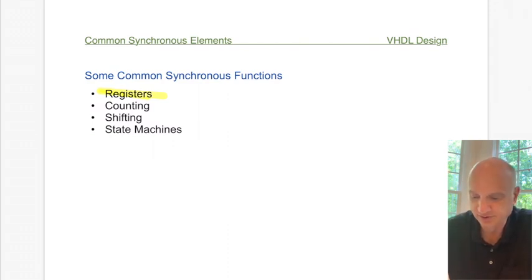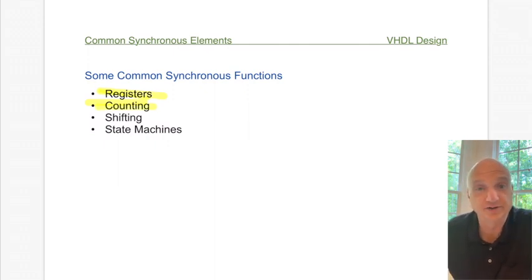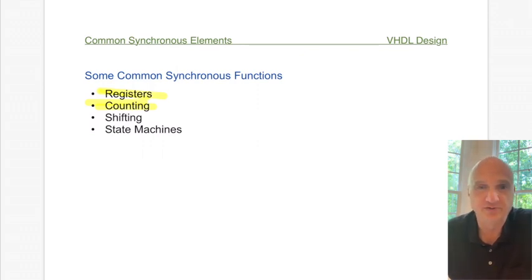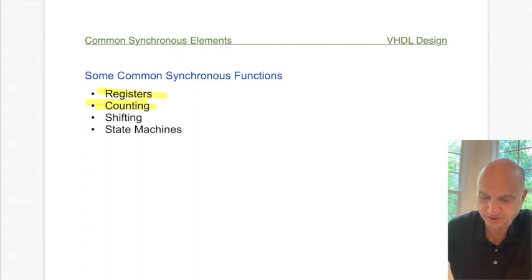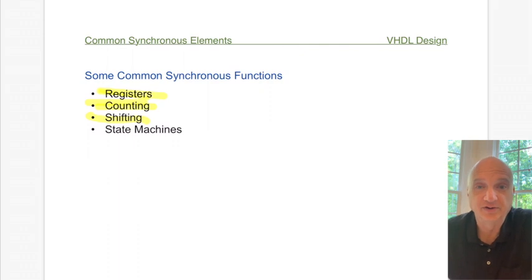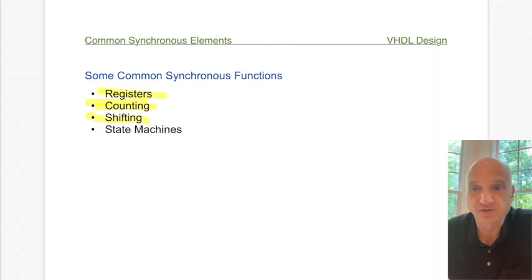Registers are a very common element, as we saw last time. Other features that are more advanced than a register include counting — up/down counters, event counters, and related things. Shifting is also another fairly common operation you might see in sequential systems — shift registers, shifting left, shifting right, rolling, and those kinds of things.